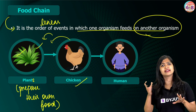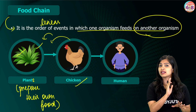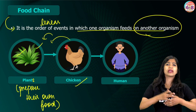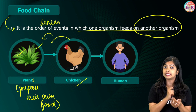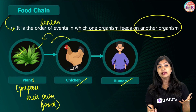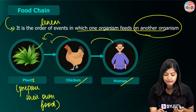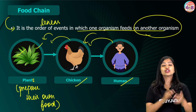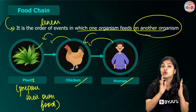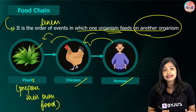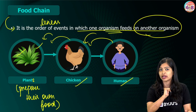Now we have some other animals that may not eat plants directly. Tigers may feed on the deer, and in this case we have human beings who may feed on the chicken. So this is what we mean by a food chain — one organism is feeding on another organism.